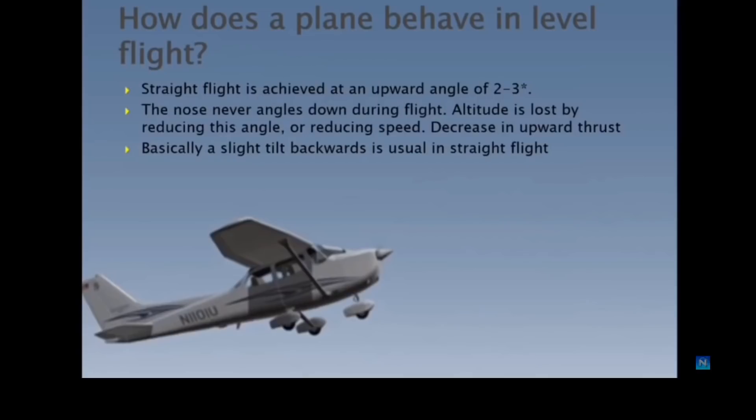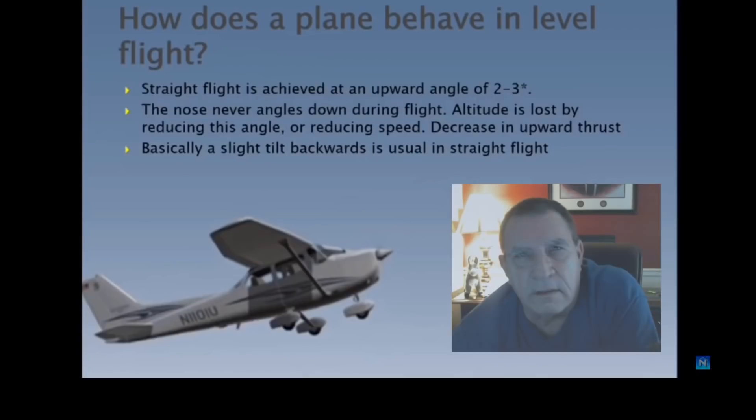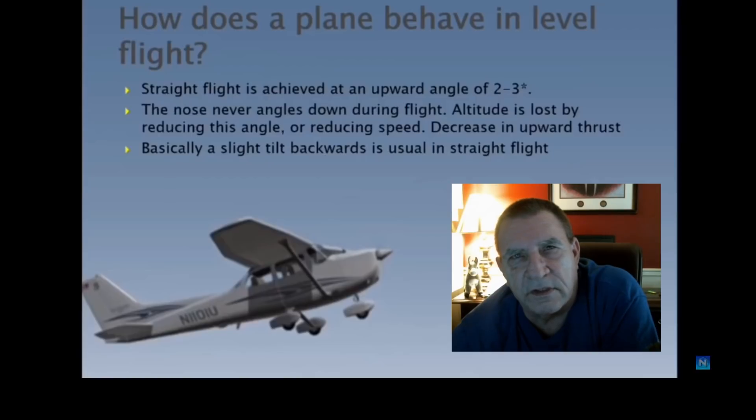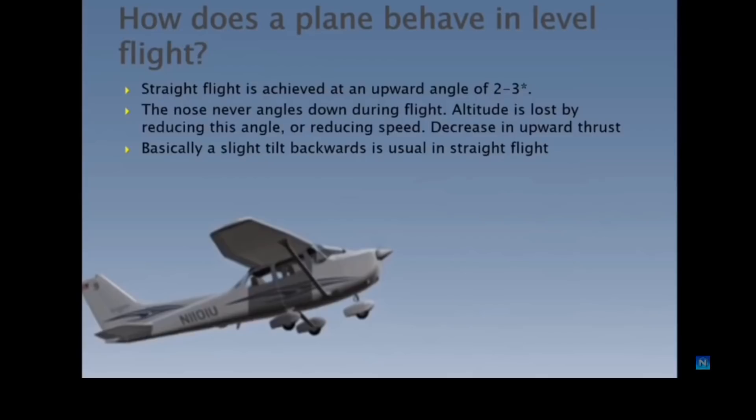They basically fly. Straight fly is achieved at an upward angle of between two and three degrees, slightly more sometimes in larger aircraft. The nose never actually angles down during flight. That isn't strictly true. During the descent phase of a flight, we may actually have the nose angled down slightly, but we'll let that go.